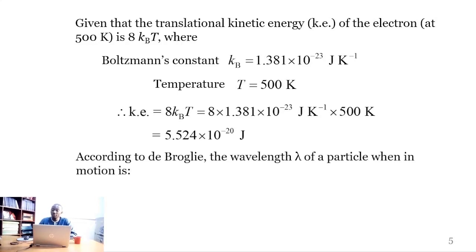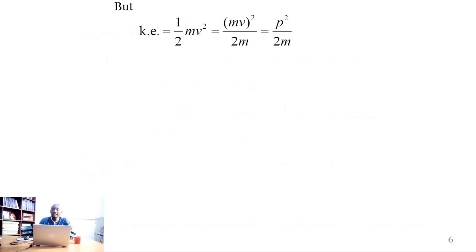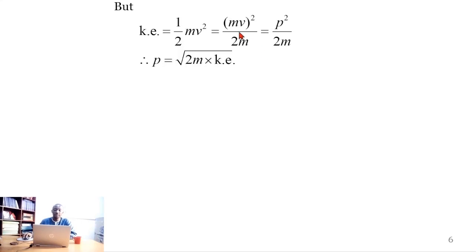According to de Broglie, the wavelength of a particle in motion is λ = h/p, where λ is the wavelength, h is Planck's constant, and p is the linear momentum of the particle. We know that the kinetic energy is ½mv². We can rewrite this as mv²/2m = p²/2m, where m is the mass and v is the velocity. Making p the subject of the formula gives p = √(2mE_k).